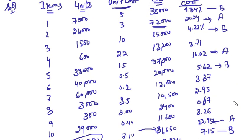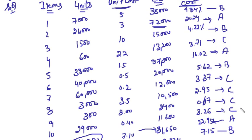Category B items are those comparatively less important than A items but more important than C items. And the remaining low-cost items fall into category C. This is how ABC analysis is done.